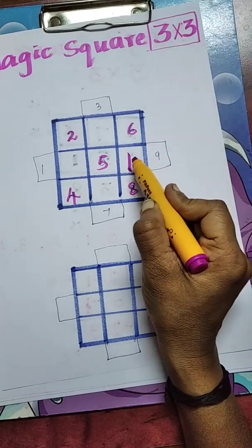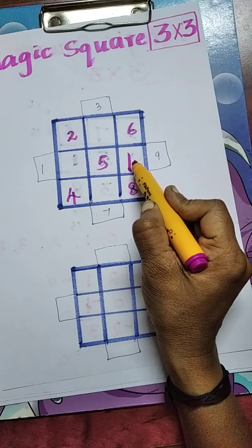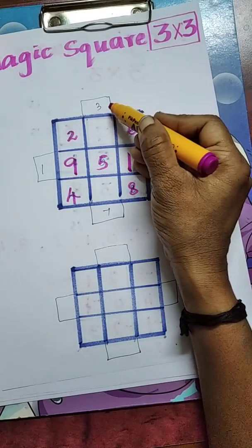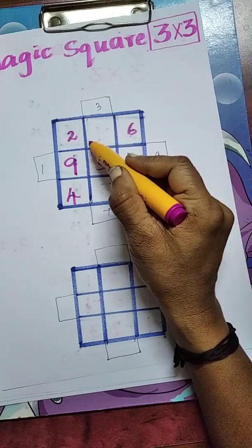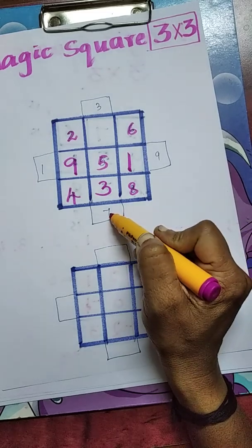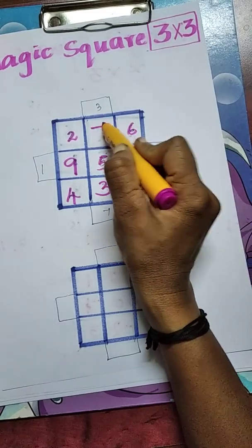Here 9, the adjacent box is this one, already filled. Go to next box: 9. Then 3, the adjacent box is this one. We have to avoid and go to next box. And 7 is left out. We can write here.